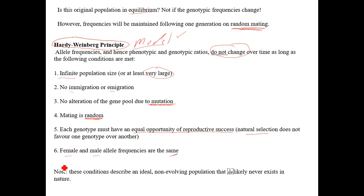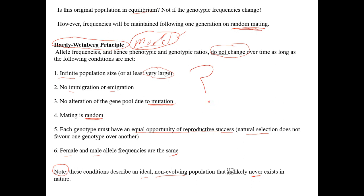These conditions describe an ideal, non-evolving population that likely never truly exists in nature. So why use a model that probably doesn't truly exist? Because it still allows us to make a fairly accurate prediction, especially when we have a fairly large sample size.